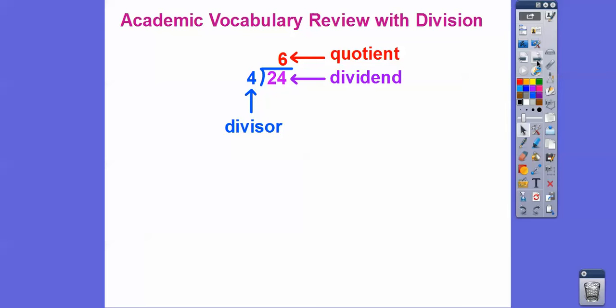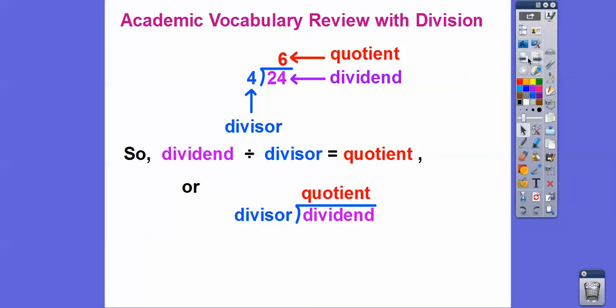Here's a review of some vocabulary with division. When we divide 4 into 24, the 24 that's getting divided by the 4 is called the dividend, and the 4 that's going into it is called the divisor. Our answer is the quotient. So the divisor goes into the dividend and gives us our quotient.